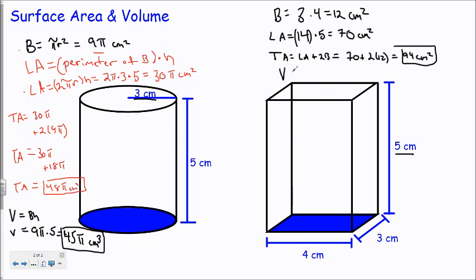And if I want the volume, that's the area of the base shape times its height. The area of the base shape is 12 centimeters squared times the height of the prism is 5, which will give me 60 cubic centimeters.